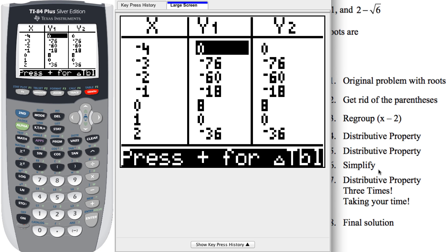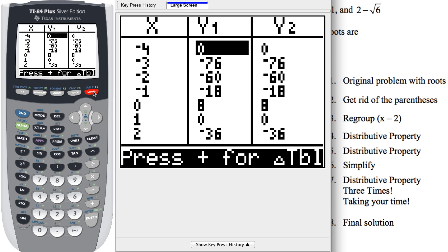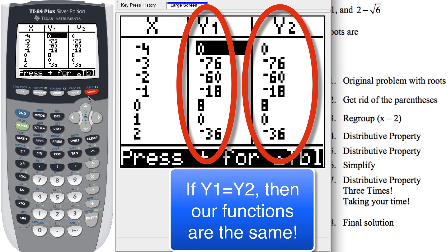Now if our original problem and our final solution, if those two pieces we have in y equals, if those values or if those polynomials are in fact the same thing, then that means when I take a look at my table, the y1 and y2 columns will be identical. They'll be exactly the same.